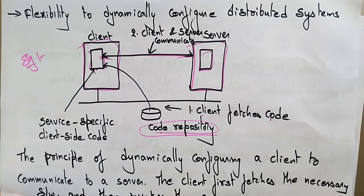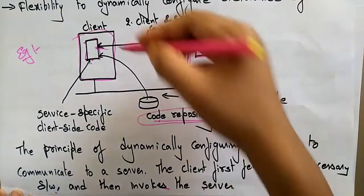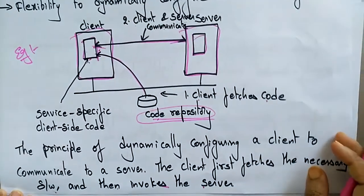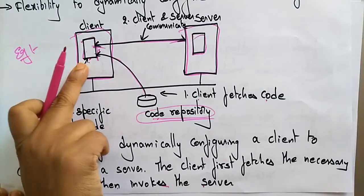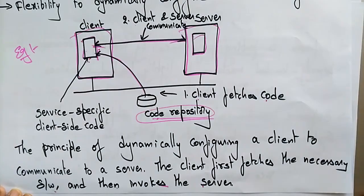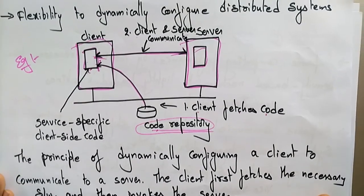The principle of dynamically configuring a client to communicate with a server is: the client first fetches the necessary software and then invokes the server. Whatever the client needs from the server, it first fetches the necessary software, and then invokes the server. This is an introduction to code migration.